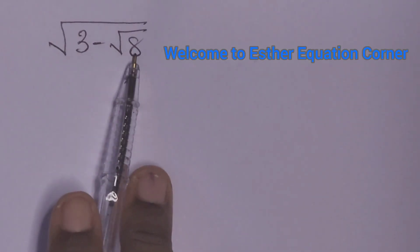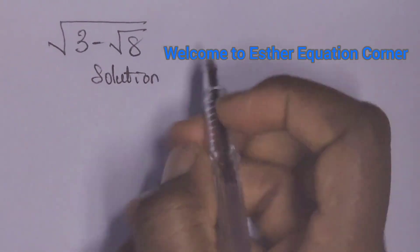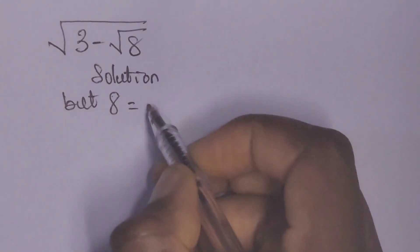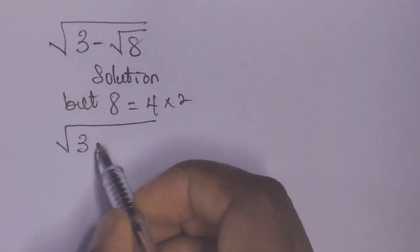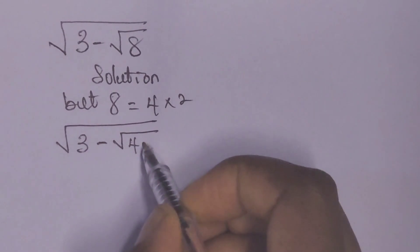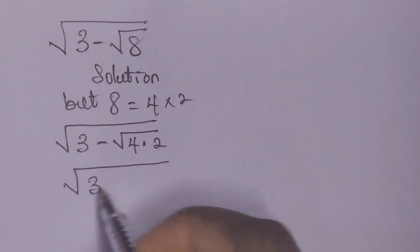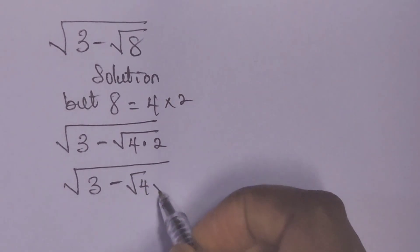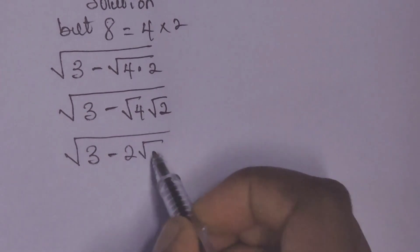We want to solve the square root of 3 minus root 8. But 8 is the same as 4 times 2, so we have square root of 3 minus root 4 times 2. This is equal to root 3 minus root 4 times root 2, which gives us root 3 minus 2 root 2.